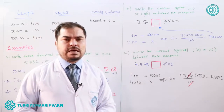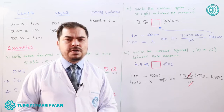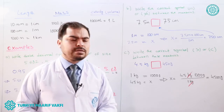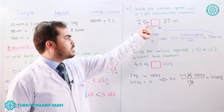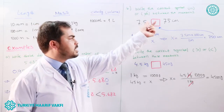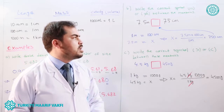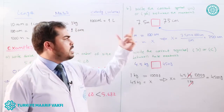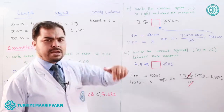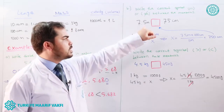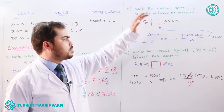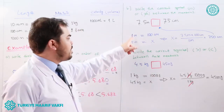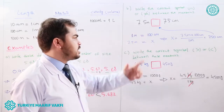The easiest way is to convert the bigger unit to the smaller unit — that is, convert meters to centimeters. We know one meter equals one hundred centimeters, so we set up a proportion: 7.5 meters equals x centimeters.